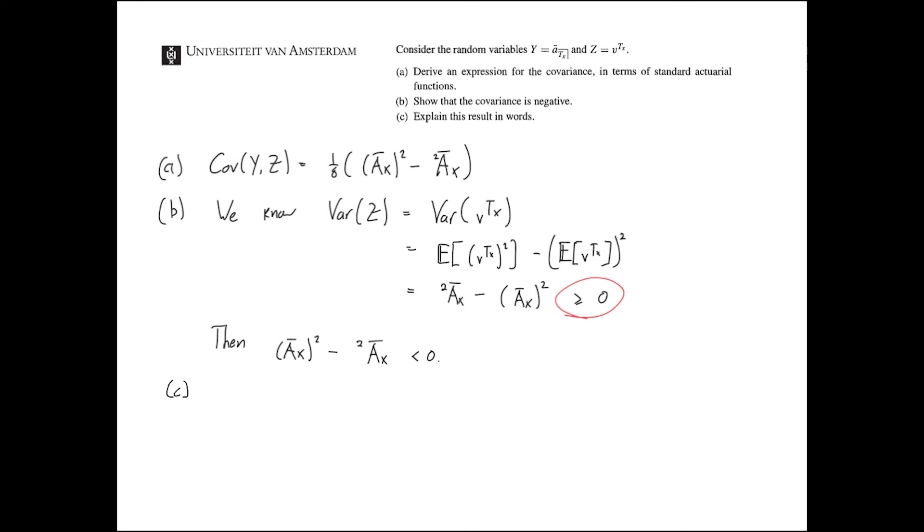Now for part C, the question is to explain this in words. Well, let's think about what this statement says. So, if the covariance is negative, then it means that they are negatively correlated. So, suppose T x increases. So, if T x increases, it should have opposite effects on the random variables y and z.